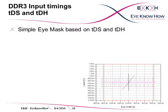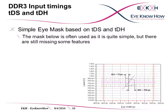Out of these numbers, we can generate a simple eye mask. Starting at the DQS crossing, we go 75 picoseconds to the left for setup. And the same for hold: starting from the DQS crossing, go 150 picoseconds to the right. Now connect the crossing points of the setup with AC with the crossing points of the hold lines with the DC levels. This mask is often used as it is quite simple, but there are still some missing features.